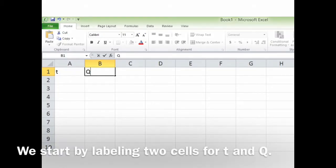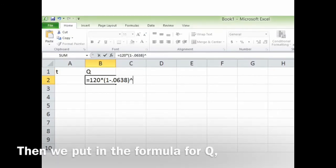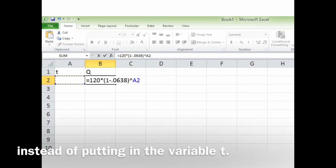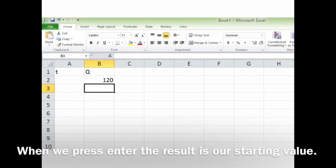We start by labeling two cells for T and Q. Then we put in the formula for Q, using the cell reference to the blank cell for T, instead of putting in the variable T. When we press enter, the result was our starting value.